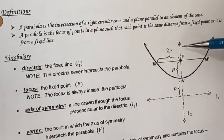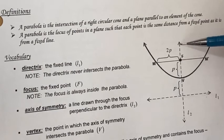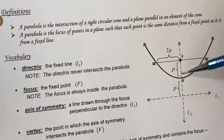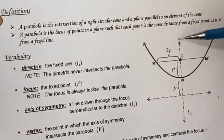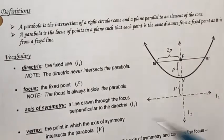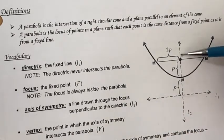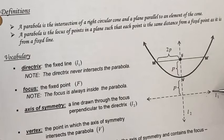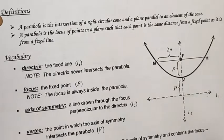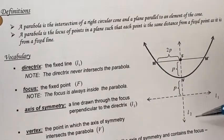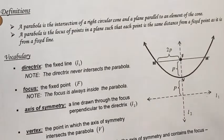Then there's the axis of symmetry — the imaginary line that cuts your parabola into equal pieces. We draw this line through the focus and it's perpendicular to the directrix. In this situation we call it L2.